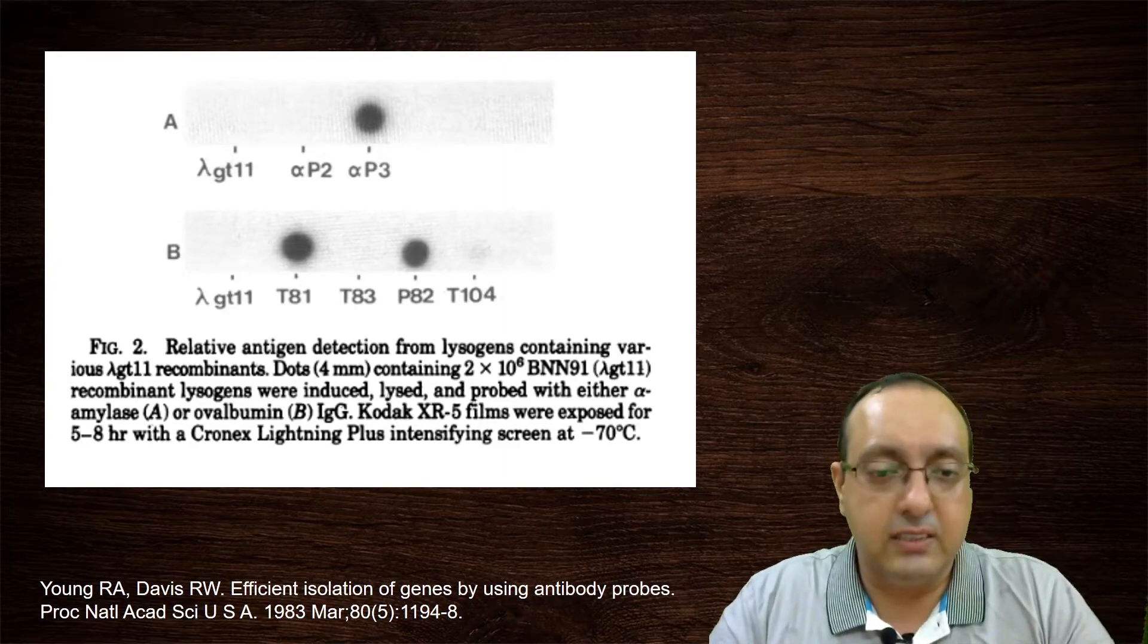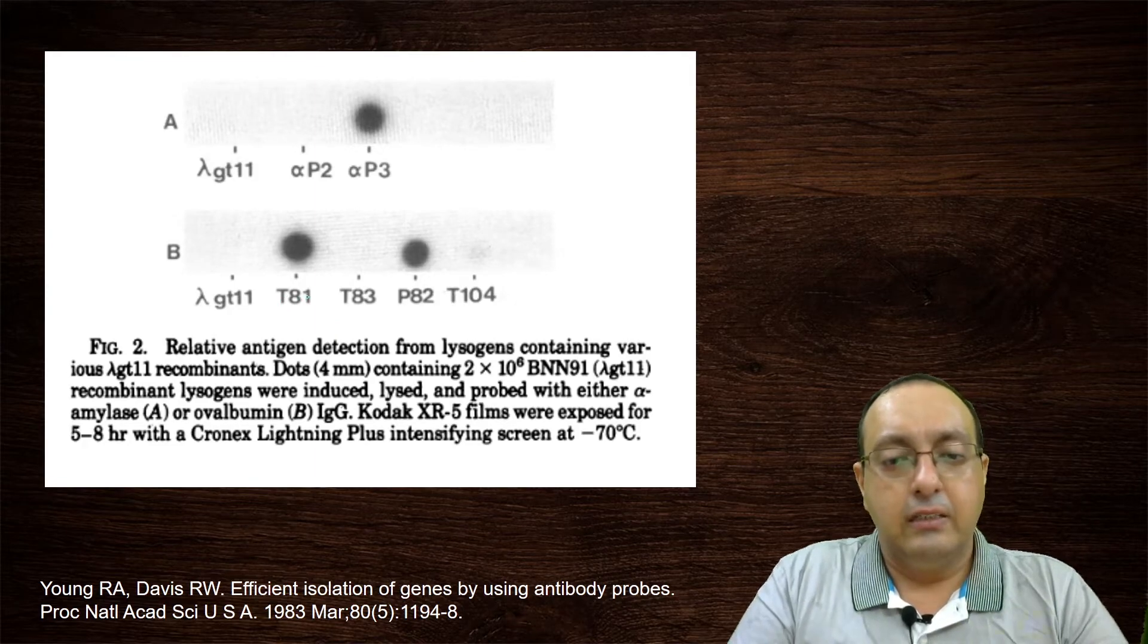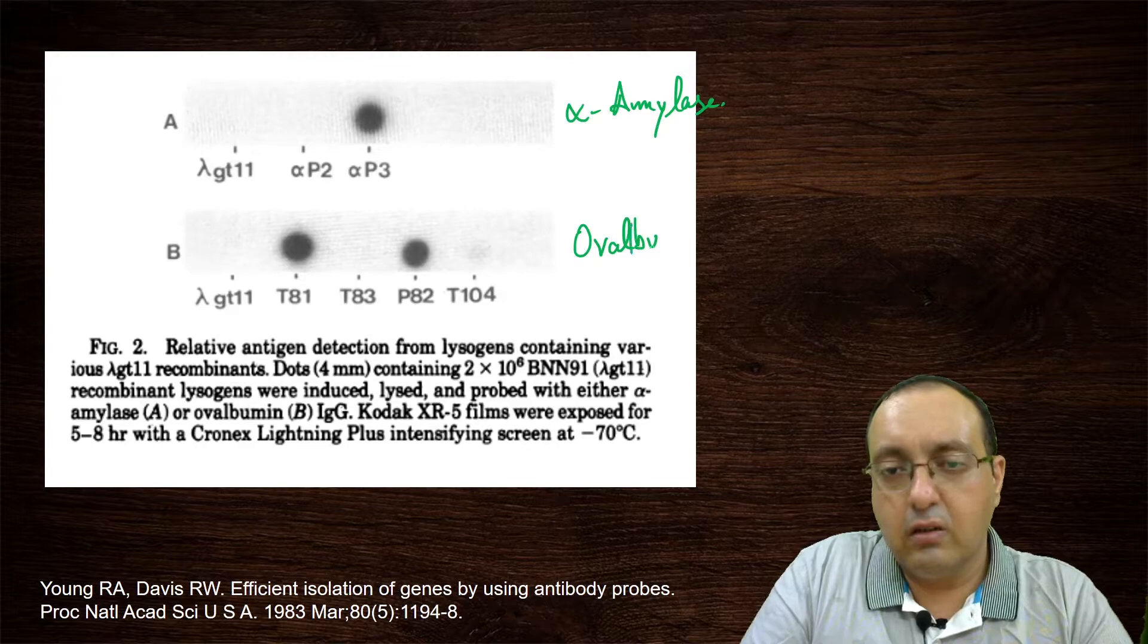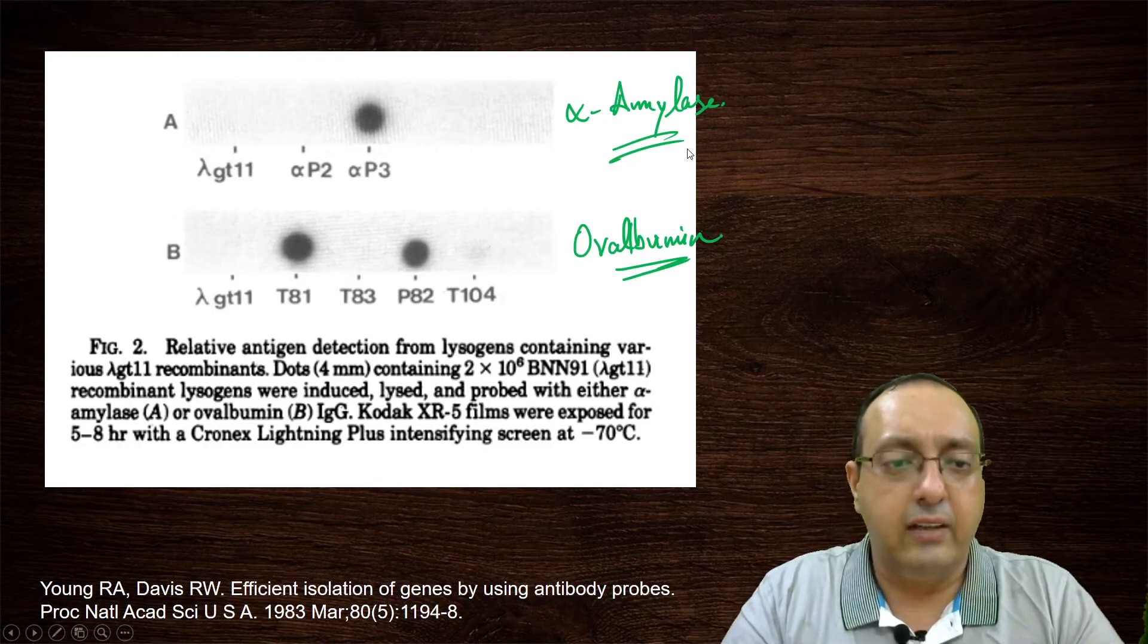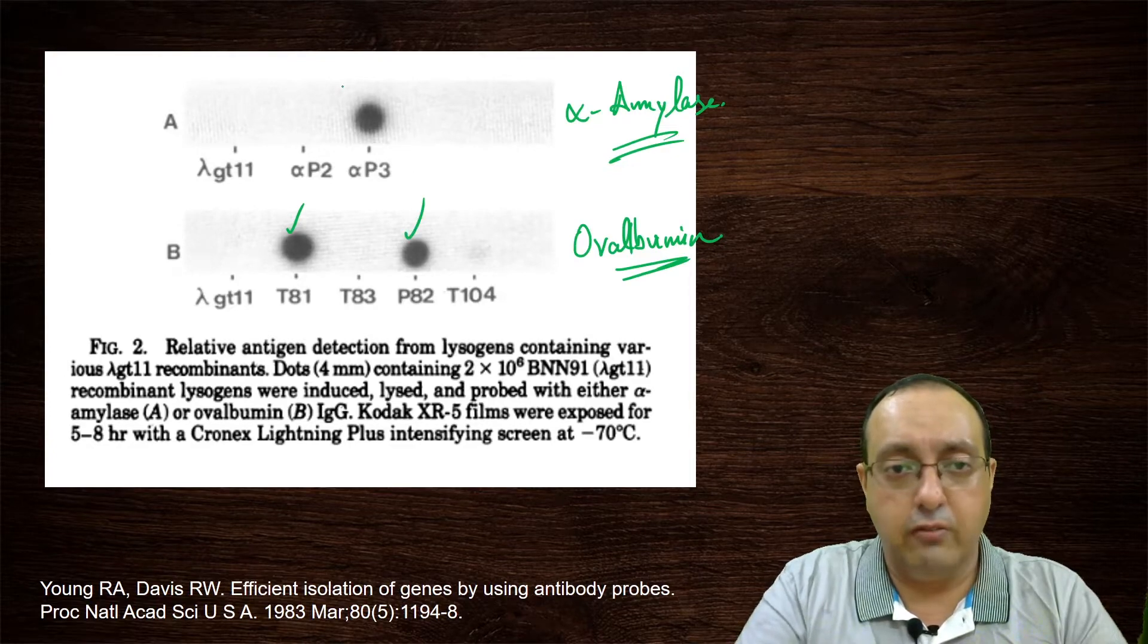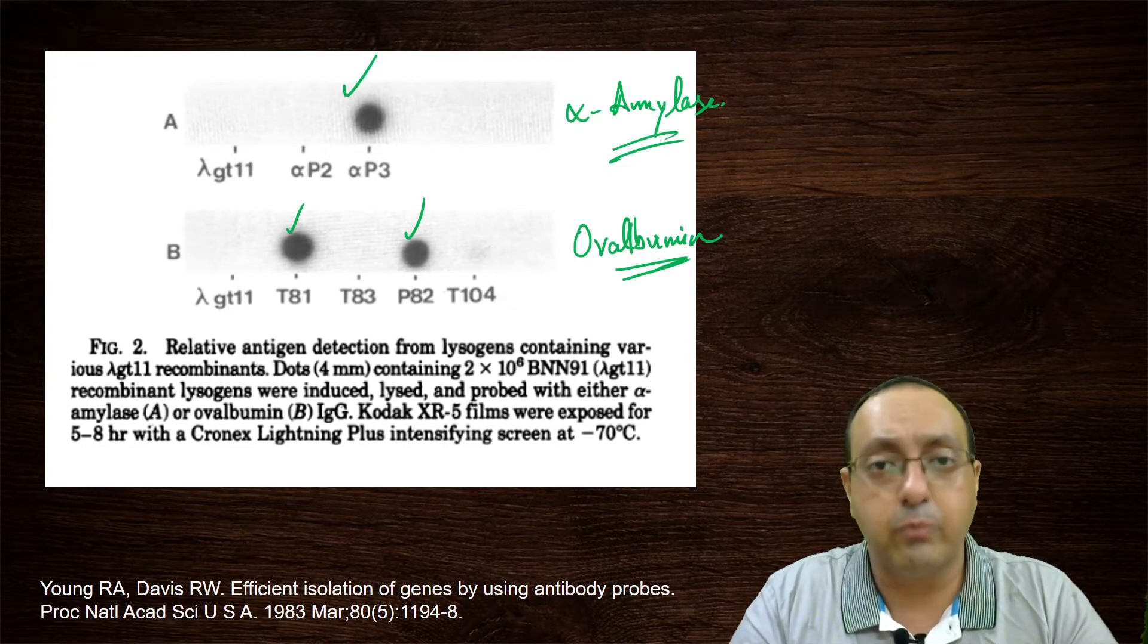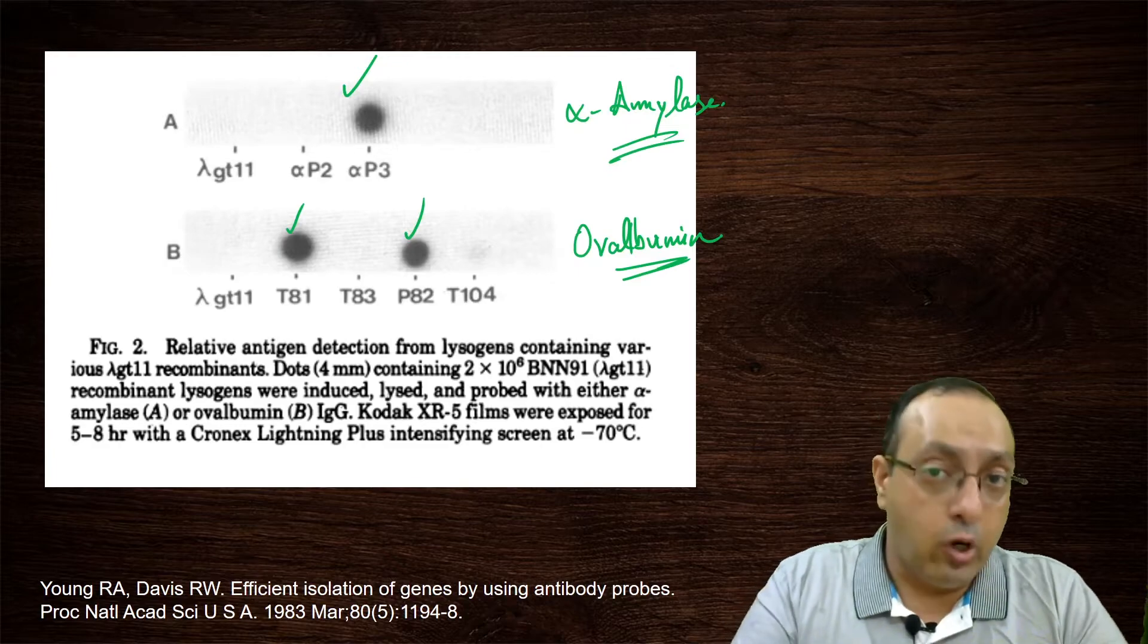And this is the figure from the paper. Here they have, they are looking at the alpha amylase and ovalbumin clones. Two relatively very common proteins. And these are lambda GT11 vectors. So these are different colonies. And these are the positive colonies, which get the positive signal. And then these can be further analyzed using plaques. And these plaques can be grown and then protein can be harvested and analyzed. So this is the principle behind using antibody probes.